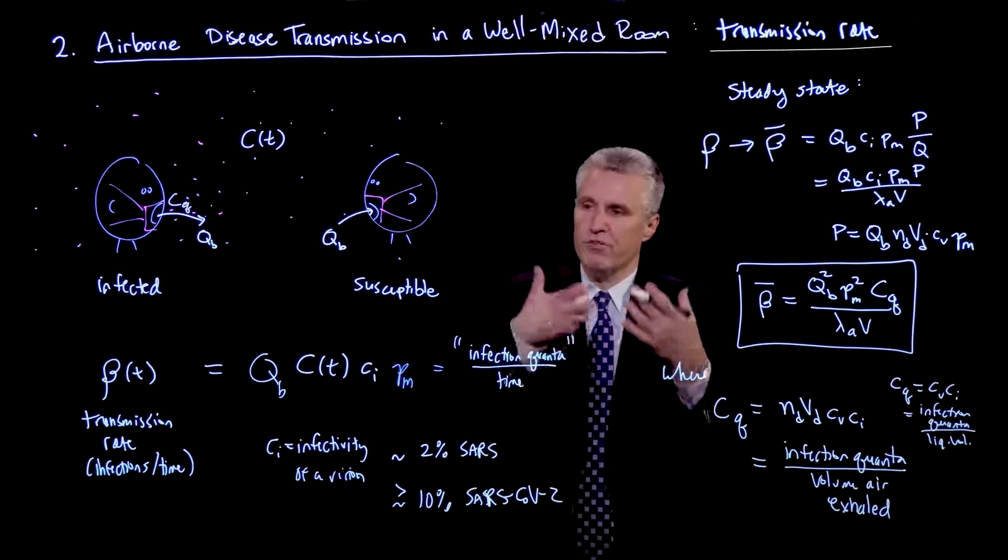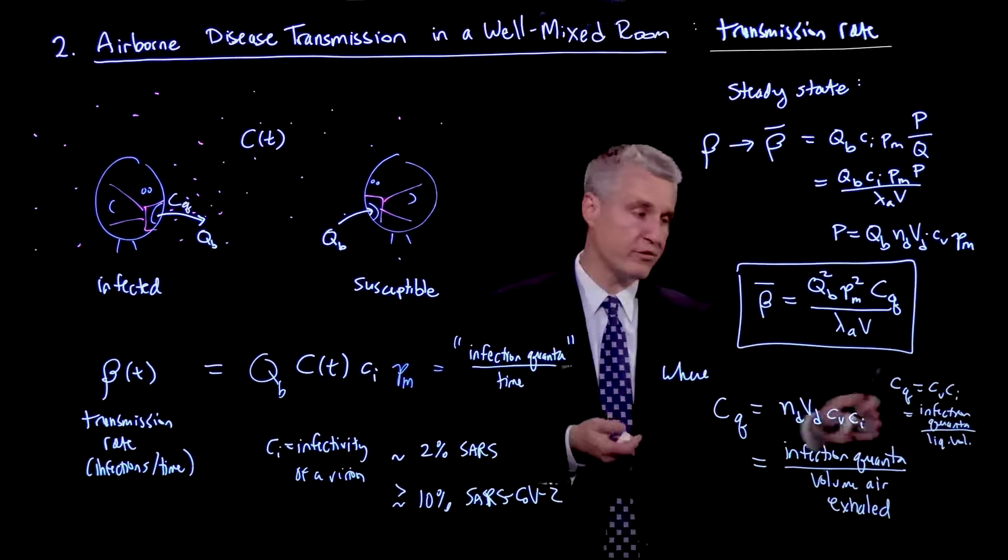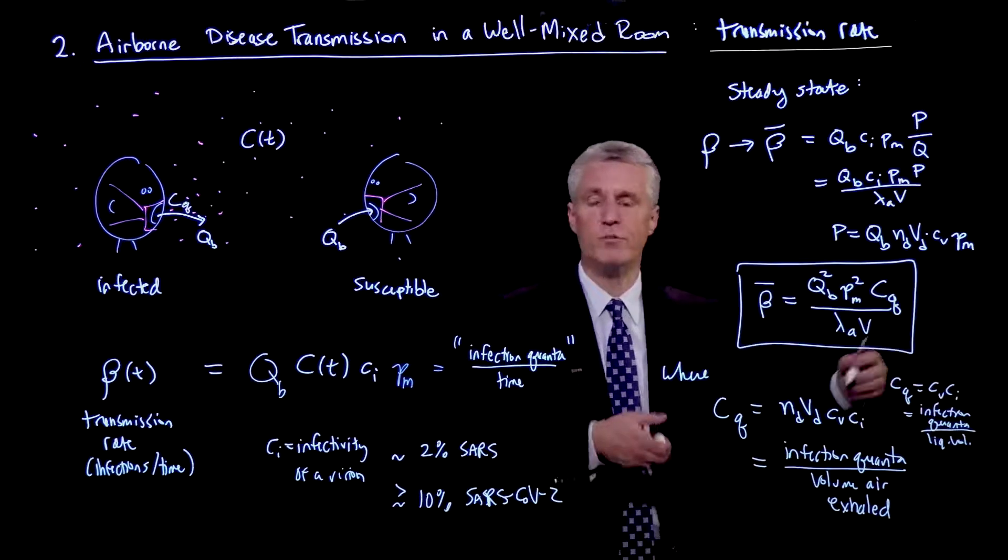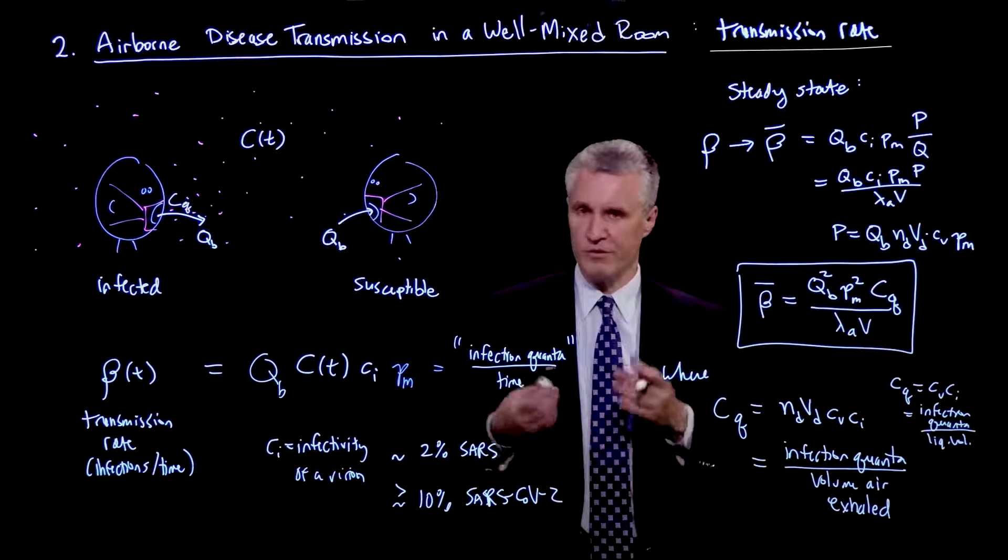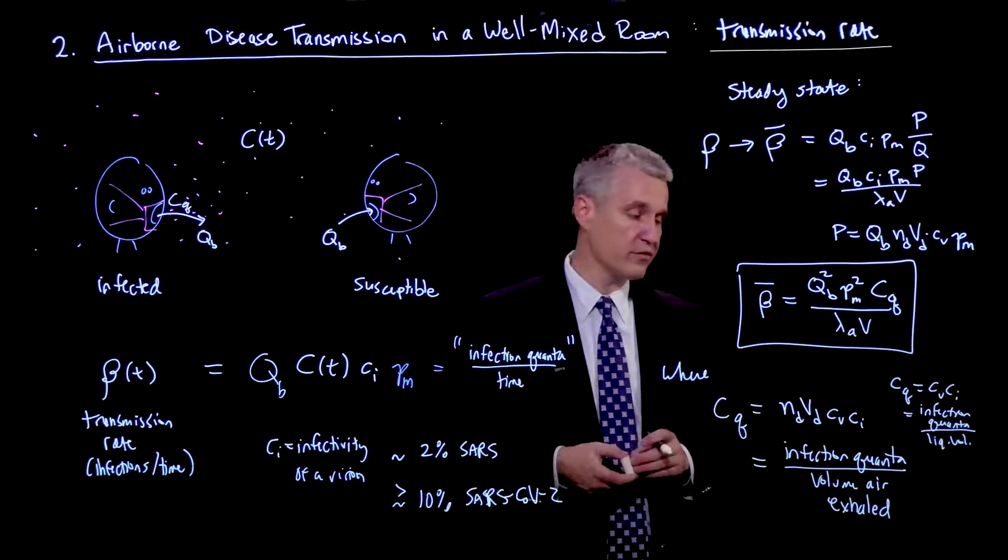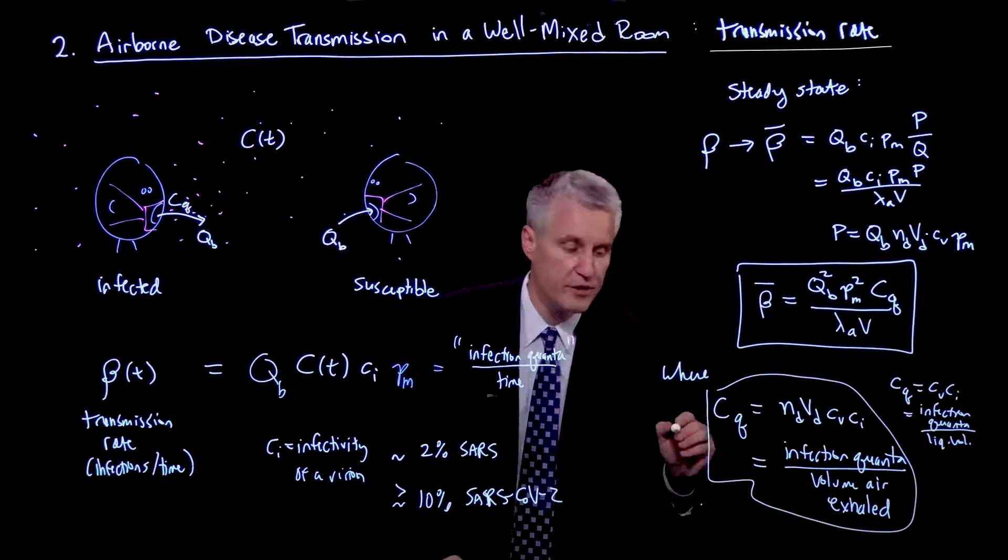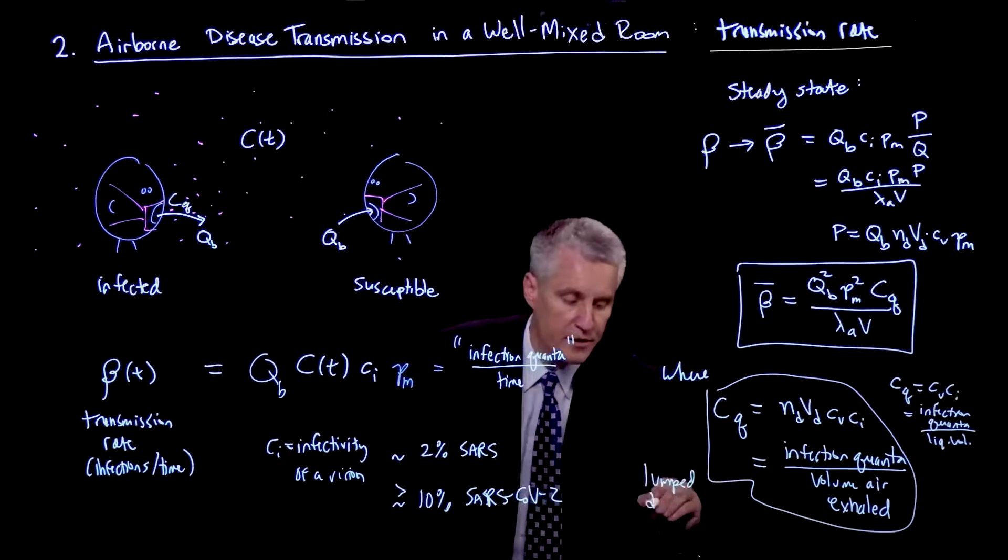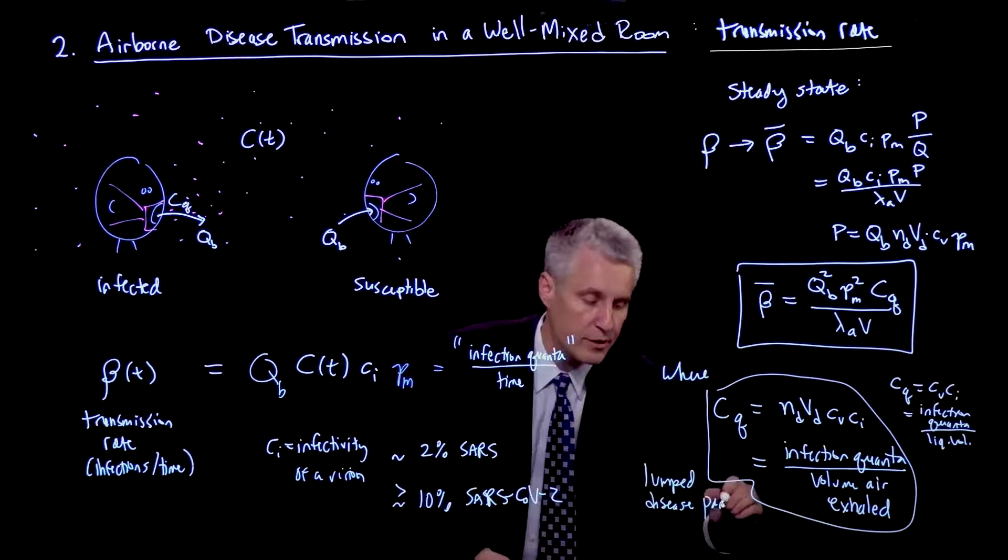Which is the physical concentration of the virions, CV, times the probability that if they were to be exposed to the susceptible person's cells, that they would actually infect those cells and cause a transmission of the infection. So this is another important quantity. And this here is really the primary lumped or combined disease and physiological parameter in the model.